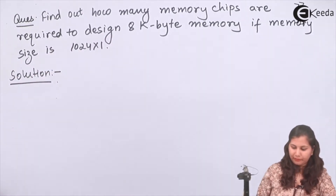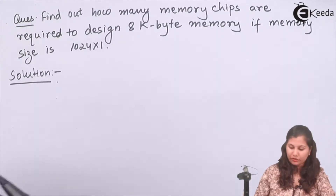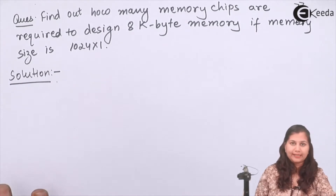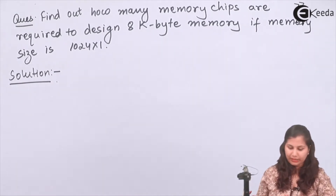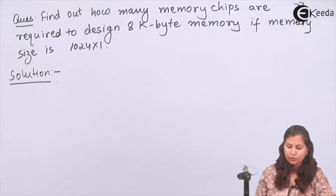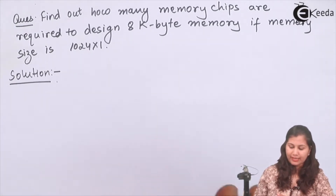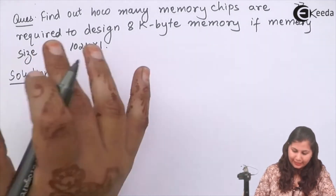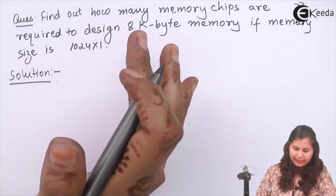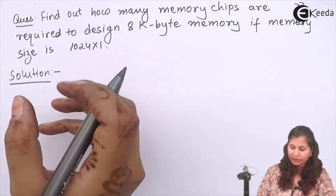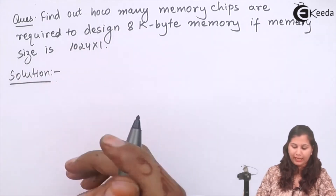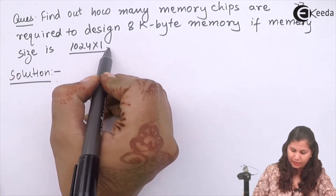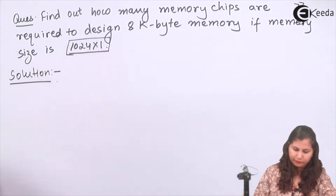We know that memory devices or memory chips are available in a number of word sizes. The word size can be 4, it can be 8, it can be 1. The size of the memory chip is specified in terms of how many bits that memory can store. Here we are given that 1024 x 1 is the size of the memory.